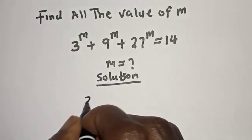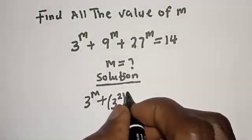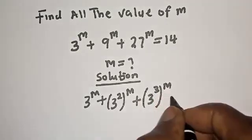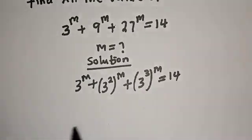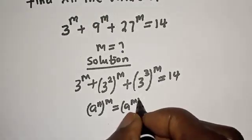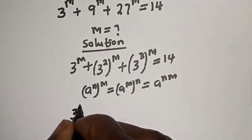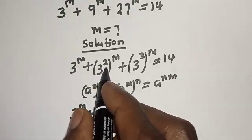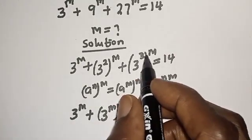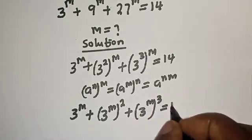We have 3 raised to power m, plus 9 raised to power m which can be written as 3 squared raised to power m, plus 27 raised to power m which can be written as 3 raised to power 3 raised to power m, equal to 14. Using the rule that a raised to power m raised to power n equals a raised to power mn, we get 3 raised to power m plus 3 raised to power 2m plus 3 raised to power 3m equal to 14.